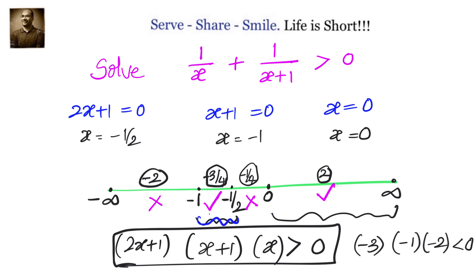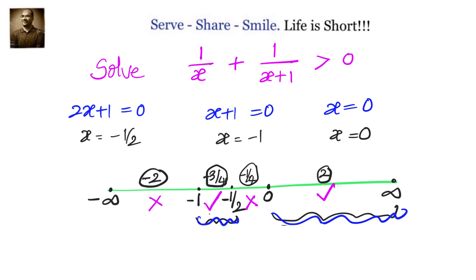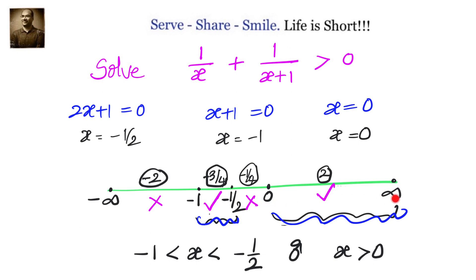So let us write down our solution. The solution is: -1 < x < -1/2, or x > 0. The interval (-1, -1/2) and the interval (0, ∞) together form the solution set for the inequality 1/x + 1/(x+1) > 0.